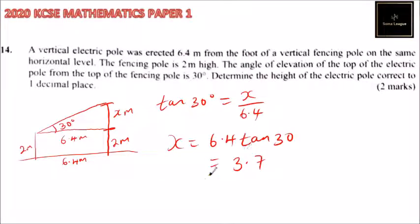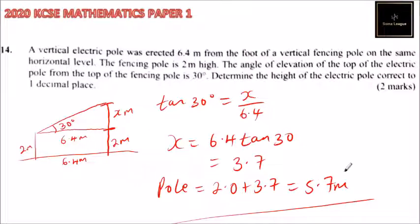Therefore the pole equals 2 meters (the height of the fencing pole) plus 3.7, which equals 5.7 meters. So that is the height of the electric pole. And that's how you work out that question.